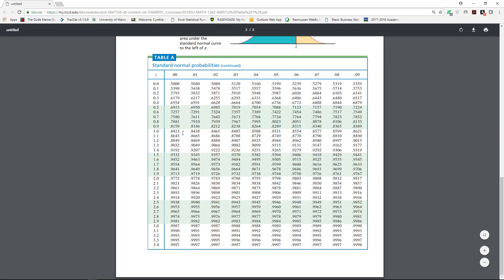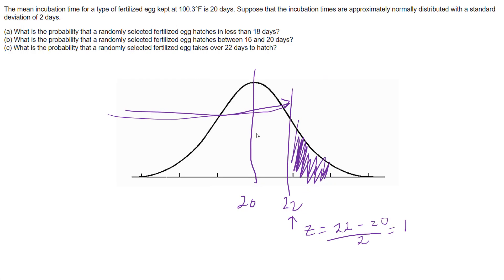Going to the positive side of the table for z = 1.00, we get 0.8413. That value represents the area to the left of z = 1. To find the area to the right — the probability of hatching after 22 days — we compute 1 minus that area.